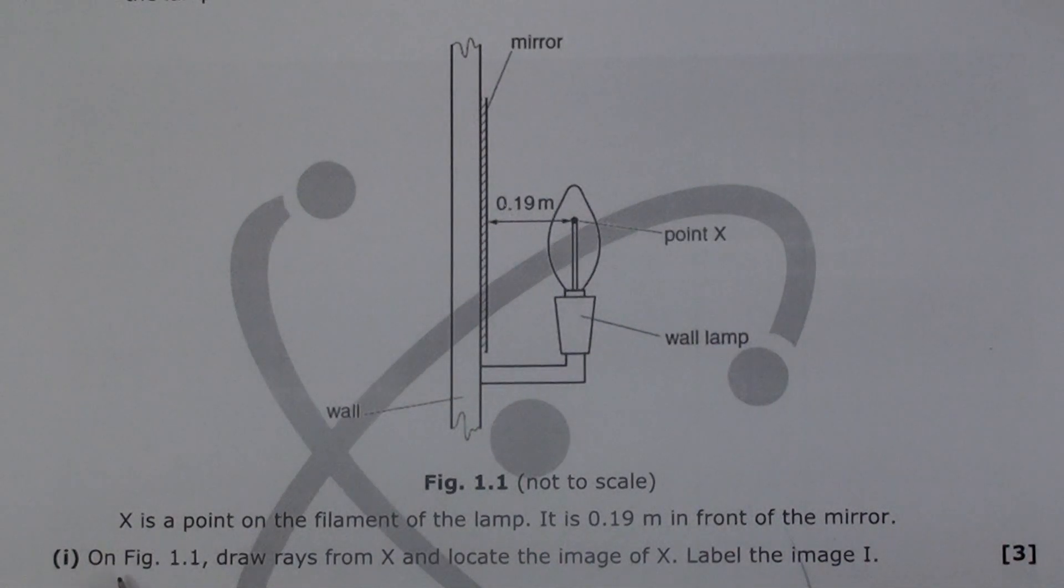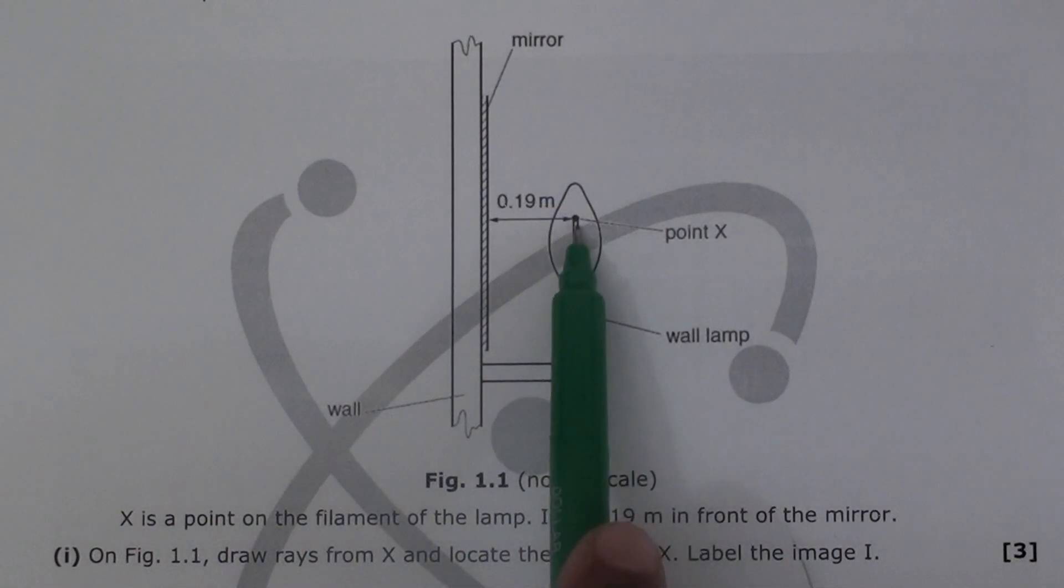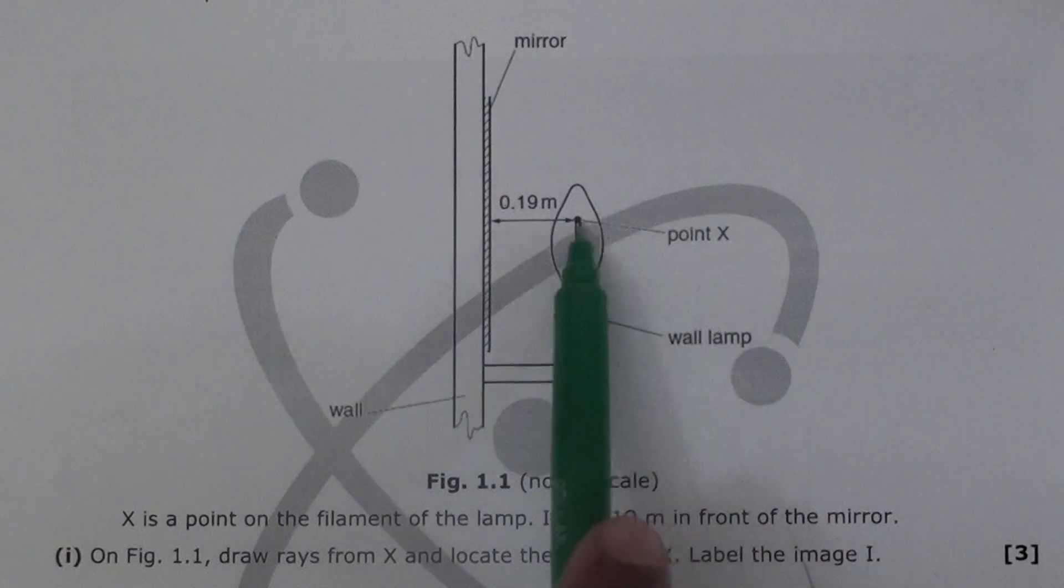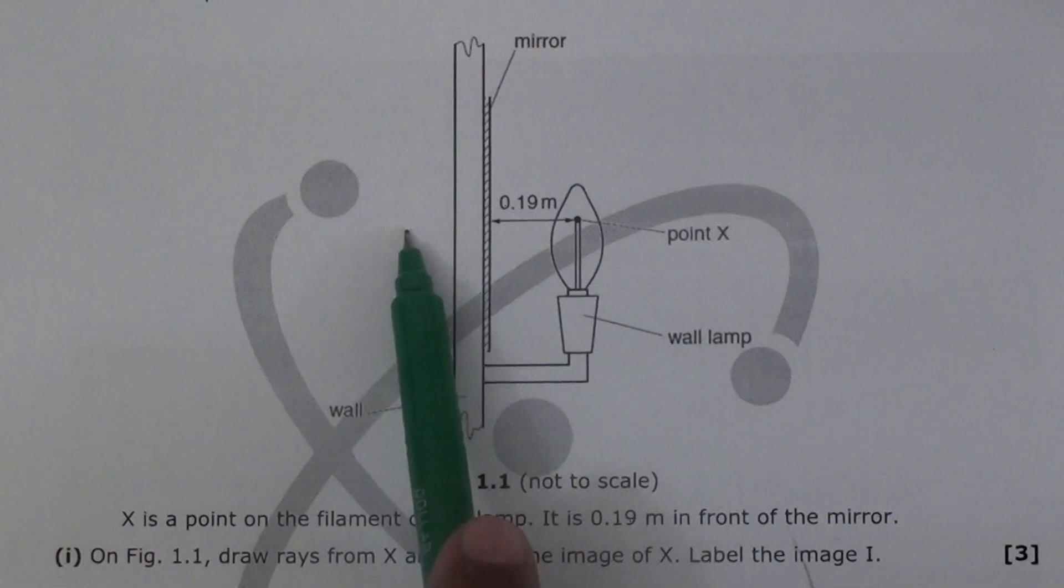The first part, which is the trickiest part: on Figure 1.1, draw rays from X and locate the image of X, label the image I. Now we need to be very careful with the laws of reflection. If you remember in class what we discussed - this is the object, this is the point which we want to make, so the distance from the mirror, the distance of object, should be same as distance of image.